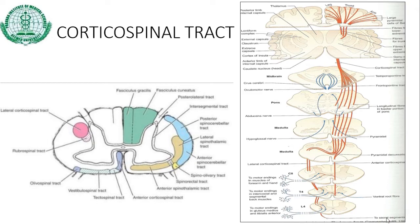The corticonuclear fibers arise and lie along the corticospinal fibers. In the internal capsule, they occupy the genu of the internal capsule. In the midbrain, they lie medial to the corticospinal fibers. At different levels of the brainstem, they cross to the opposite side and synapse with the cells of the cranial nerve nuclei, which supply the muscles and are functionally equivalent to the anterior horn cells of the spinal cord.